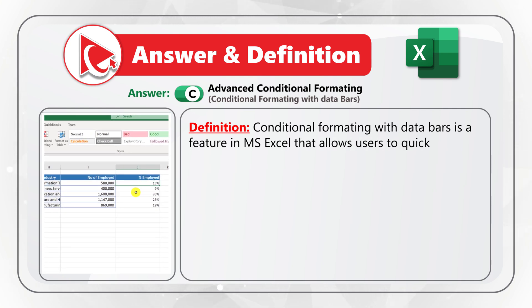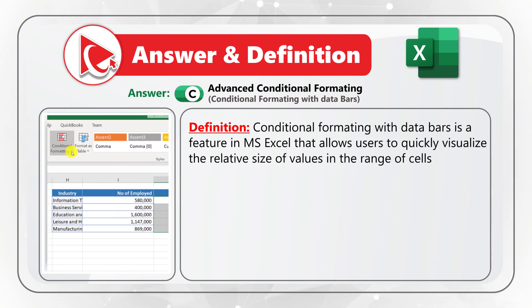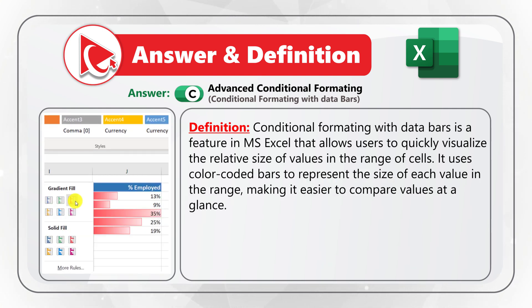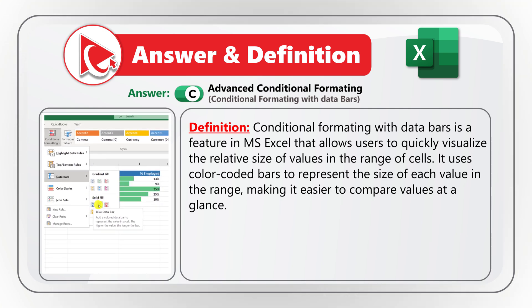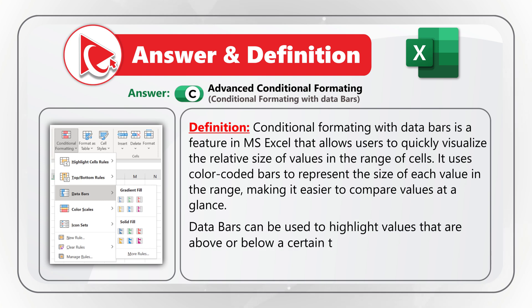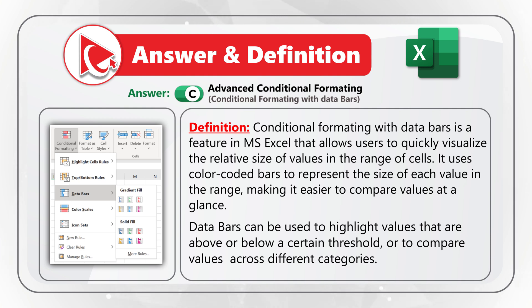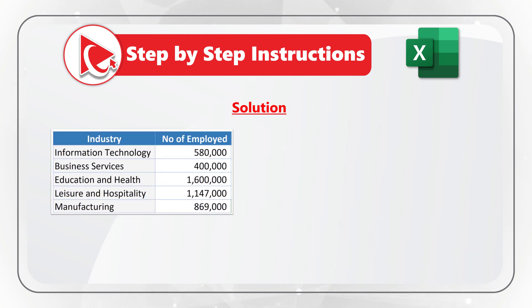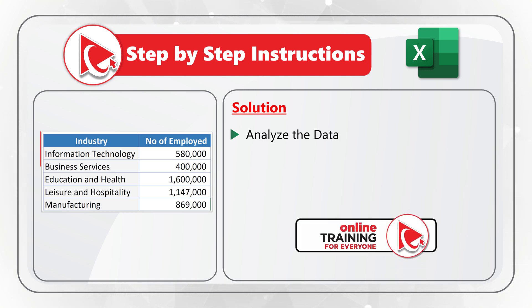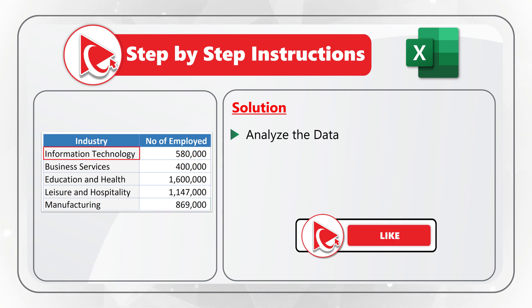Conditional formatting with data bars is a feature in Microsoft Excel that allows users to quickly visualize the relative size of values in a range of cells. It uses color-coded bars to represent the relative size of each value, making it easier to compare values at a glance. Data bars can highlight values above or below a threshold or compare values across categories. The first step is to analyze the data: information technology, business services, education and health, leisure and hospitality, and manufacturing.